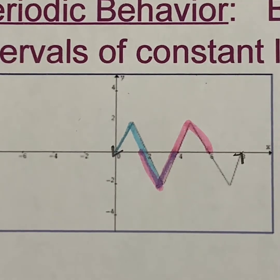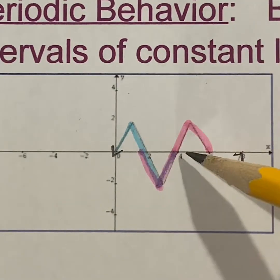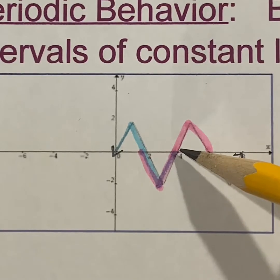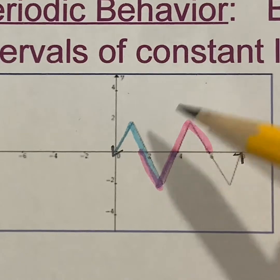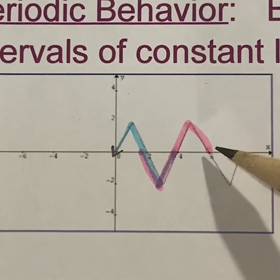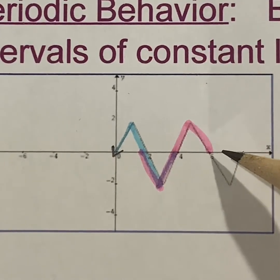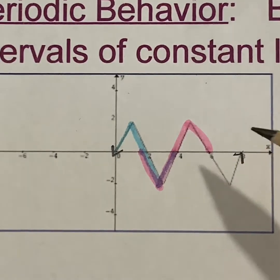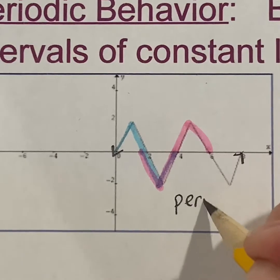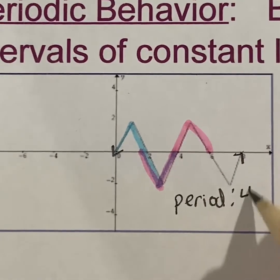The period is the horizontal length of one cycle. Looking at what I did in blue, it starts here and ends at four, so the period would be four — that's how long it took for the pattern to complete. Had I started in the pink, starting at two and ending at six, six minus two is four. So no matter how I'm looking at the cycle, the period of this periodic function is four.